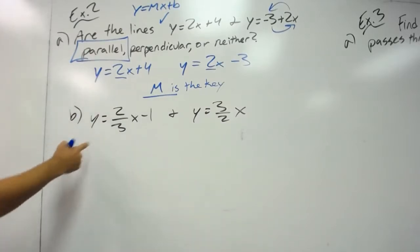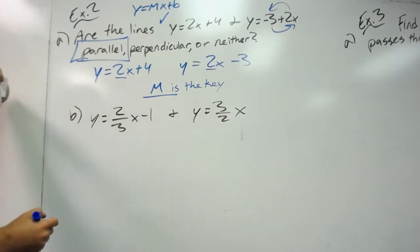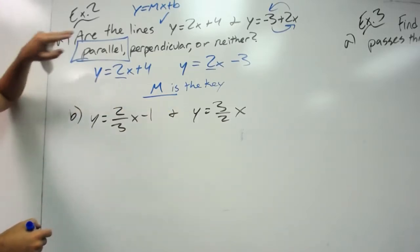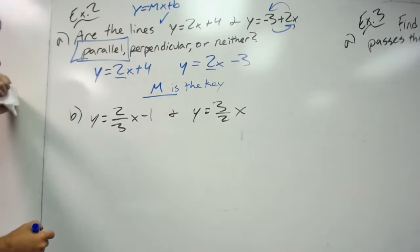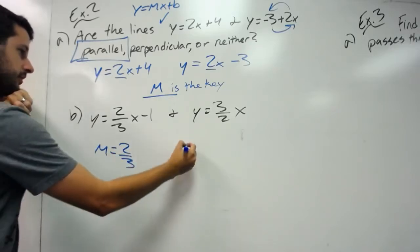Let's look at one more example. Y equals 2 thirds x minus 1, and y equals 3 halves x. Are the lines parallel, perpendicular, or neither? Our slope here is 2 thirds. Our slope here is 3 halves.